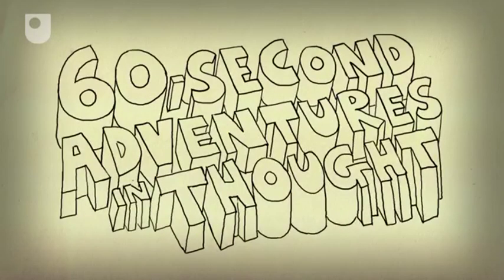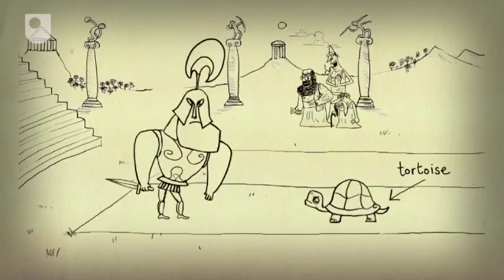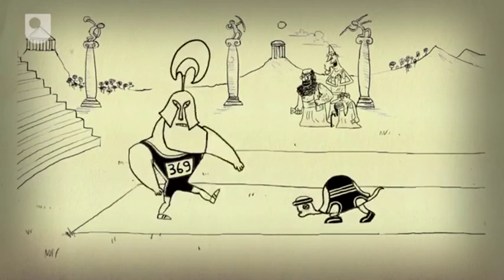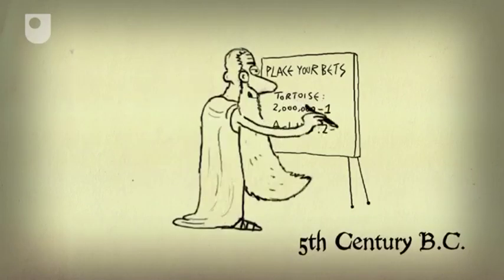60 Second Adventures in Thought Number 1: Achilles and the Tortoise. How could a humble tortoise beat the legendary Greek hero Achilles in a race? The Greek philosopher Zeno liked a challenge and came up with this paradox.